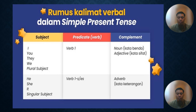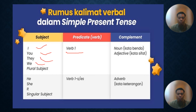Rumus kalimat verbal dalam simple present tense: kapan kita tambahkan S dan kapan kita tambahkan ES. Kita lihat dulu yang pertama — kalau subjeknya I, you, they, we, atau plural subject, artinya subjeknya jamak atau lebih dari satu orang, maka kata kerja bentuk pertamanya tidak ditambahkan apa-apa. Kemudian selanjutnya, kalau subjeknya He, she, it, atau singular subject — subjeknya tunggal, misalnya cuma satu orang atau nama misalnya Ali — maka kata kerjanya ditambahkan S atau ES.